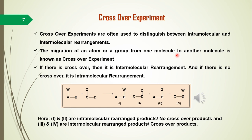How do we distinguish whether a rearrangement is intramolecular or intermolecular? We can use crossover experiments. Suppose the migration of an atom or group takes place from one molecule to another molecule — that experiment is called a crossover experiment. If there is crossover, it is intermolecular rearrangement; if there is no crossover, it is intramolecular rearrangement.